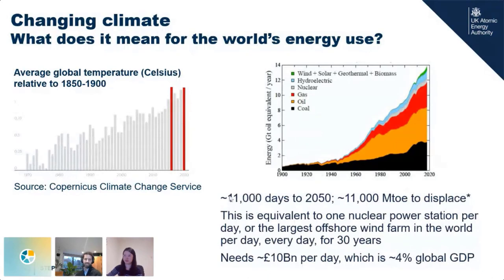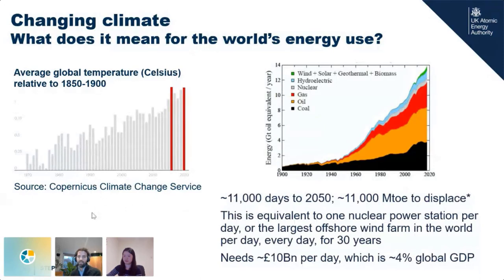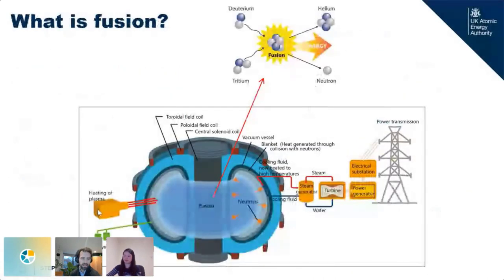Starting with motivation — with the recent COP26 conference, graphs showing climate change will be familiar. We all know climate change is real and its impact is becoming increasingly evident. There are roughly 11,000 days to 2050, the UK target for achieving net zero, and globally about 11,000 megatons of oil equivalent to displace — equating to one nuclear power station per day, or the largest offshore wind farm in the world per day, every day for 30 years.